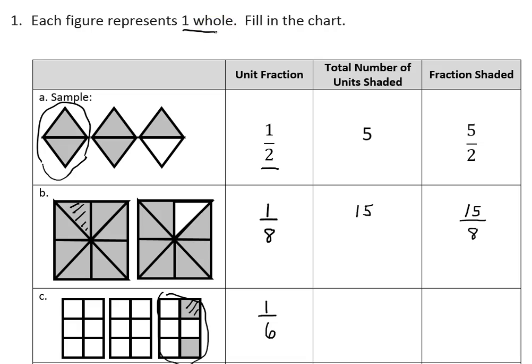I have two pieces shaded. So the total number of shaded pieces is two. And all together, I have two sixths shaded in the picture.